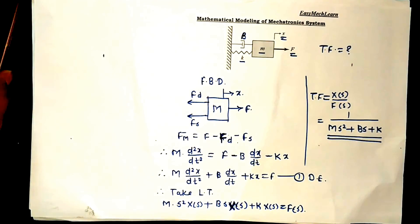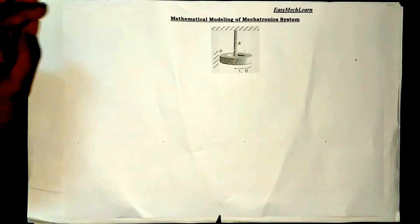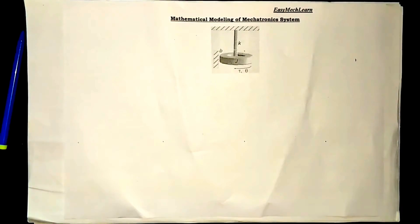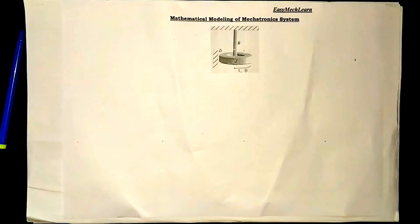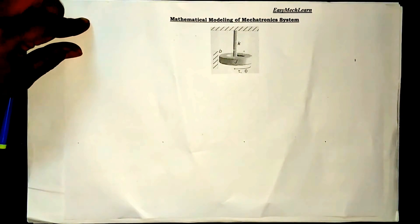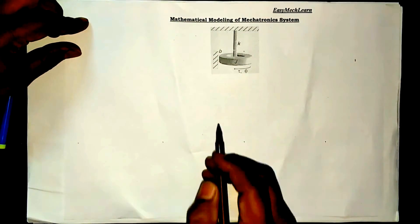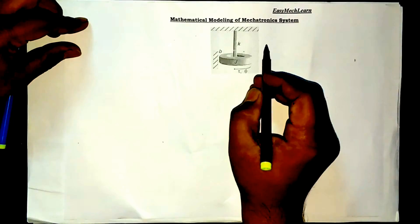Now, let us consider one more numerical having rotational motion related to the mechanical system. One disc is attached with a spring having stiffness K.